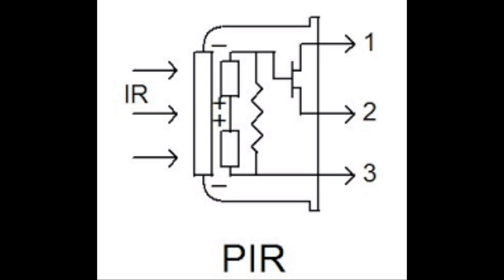When the sensor is idle, both slots detect the same amount of IR, the ambient amount radiation from the room or wall or outdoors. When a warm body like a human or animal passes by, it first intercepts half of the PIR sensor, which gets a positive differential change between the two halves. When the warm body leaves the sensing area, the reverse happens, whereby the sensor generates a negative differential change. These change pulses are what is detected. This is how this sensor can detect motion.